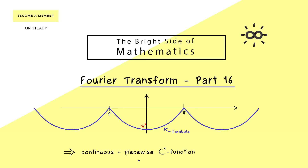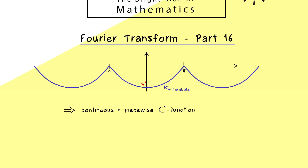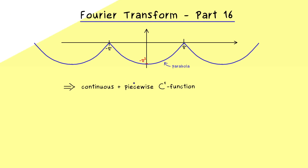From the last videos we already know that for such a function the corresponding Fourier series is uniformly convergent to the original function. So in particular it's also pointwise convergent at every point, which means we get a sum formula at every point. Indeed a nice sum formula will come out.